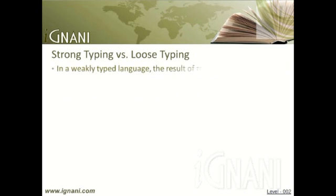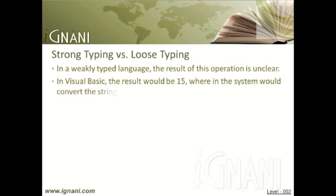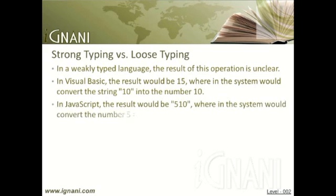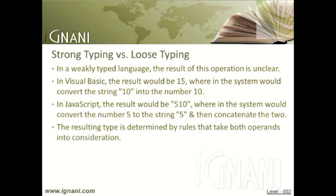In a weakly typed language, the result of this operation is unclear. In some languages such as Visual Basic, the result would be 15 — the system converts the string 10 into the number 10. In other languages such as JavaScript, the result would be 510 — the system converts the number 5 to the string 5 and concatenates the two. In both VB and JavaScript, the resulting type is determined by rules that take both operands into consideration. In JavaScript, the order of operands is not important, and using the plus operator on a string and a number results in a string, so y plus x would be 105.